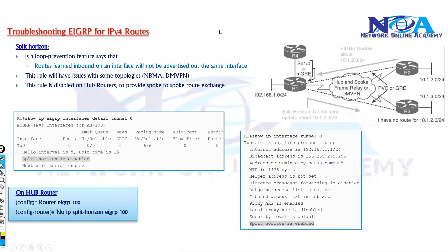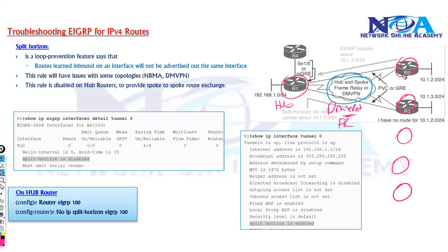One more thing we need to check: if the EIGRP routes are not being advertised, it might be because of split horizon. This is more applicable in hub and spoke scenarios, like if you are using DMVPN — which is more common nowadays — or frame relay, where you have a hub router connecting to spokes and all spokes connect via the hub.